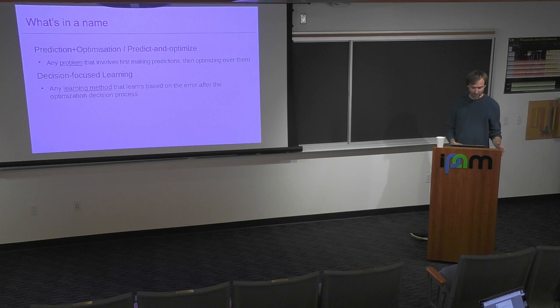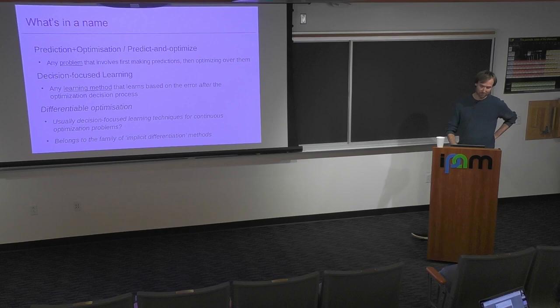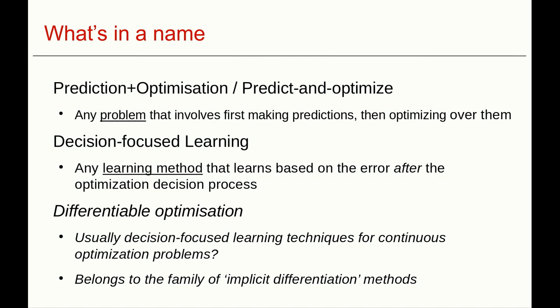When we use the term Decision-Focused Learning, this specifically refers to learning methods that learn based on the error after the optimization. Differential Optimization is mostly used when people talk about continuous optimization problems, typically also in the context of general implicit differentiation methods. I think this is one form of doing Decision-Focused Learning.